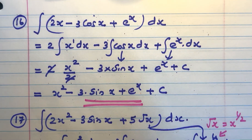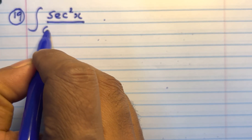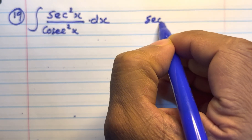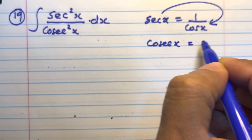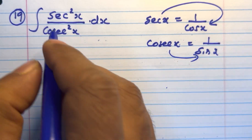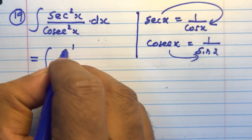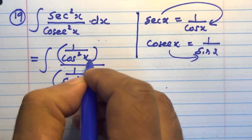Question number 19. Integral of sec squared x divided by cosec squared x into dx. We know that secx equals 1 by cosx, and cosecx equals 1 by sinx. So sec squared x is 1 by cos squared x and cosec squared x is 1 by sin squared x. So we have integral of 1 by cos squared x divided by 1 by sin squared x.